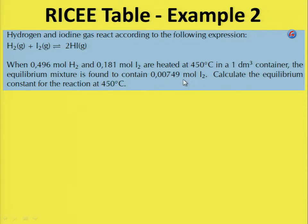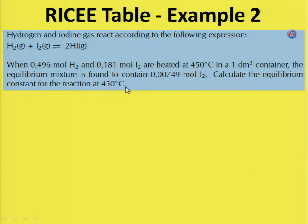The important things to note here: these quantities at the beginning of the reaction are your initial quantities — that is your I. This amount is at equilibrium. The question asks you to calculate the equilibrium constant for the reaction at 450 degrees Celsius.